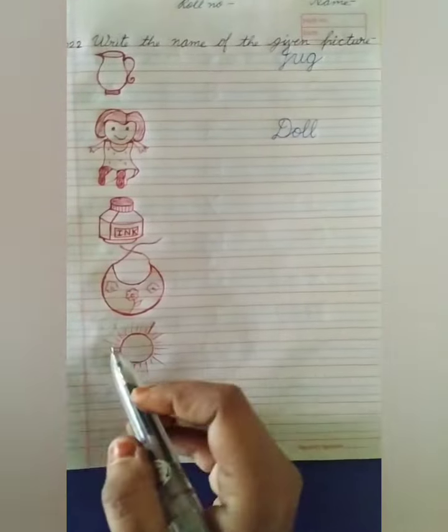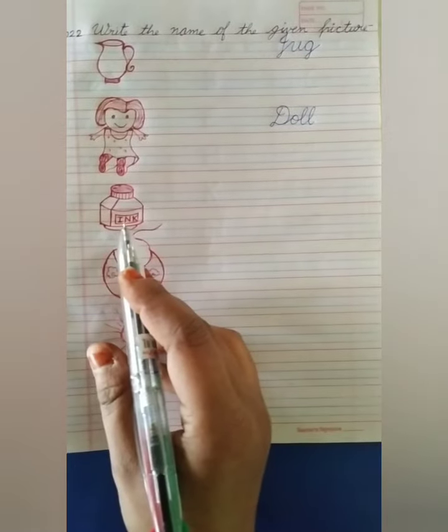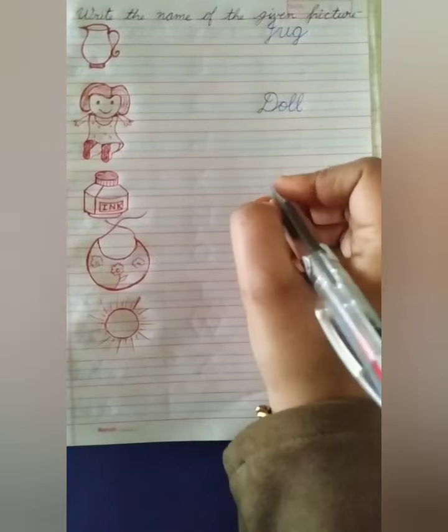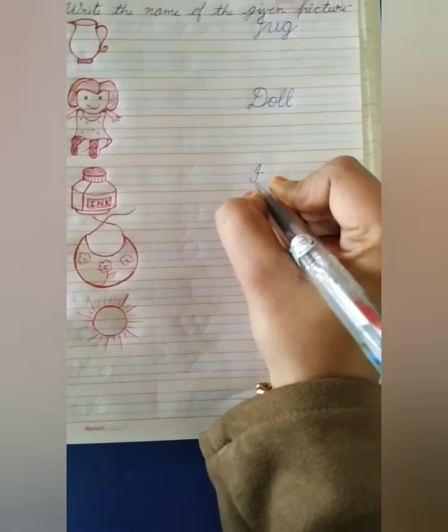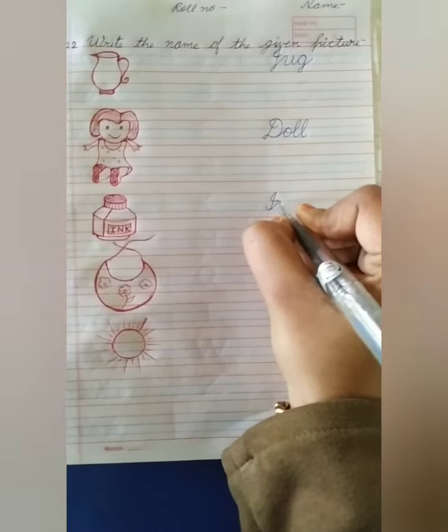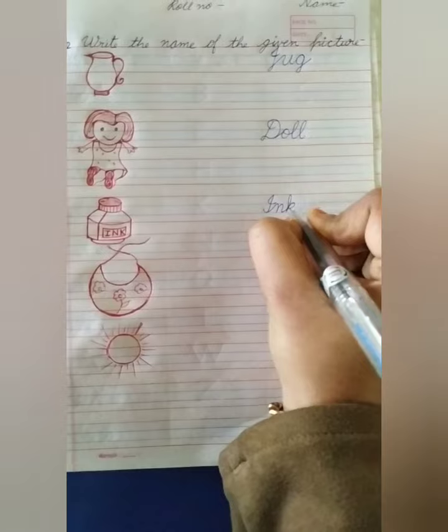Doll. Next picture is ink. What is this? Ink. So, write here. I-N-K. Ink.